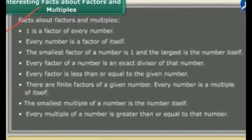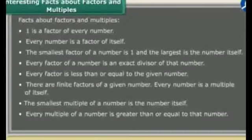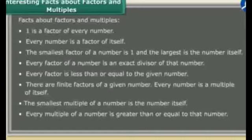Every number is a factor of itself. Like we have seen, ten was a factor of ten, and eight was a factor of eight. Ten ones are ten — ten is completely divided one time. So every number is a factor of itself.